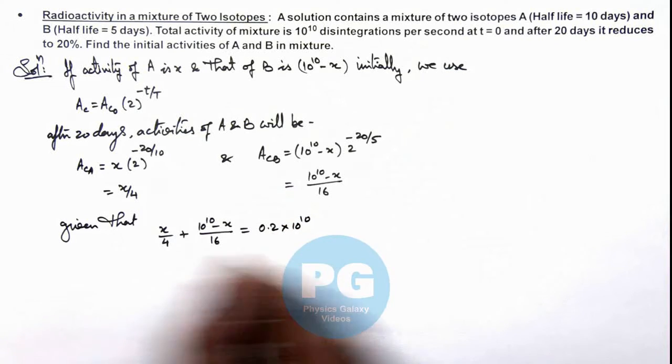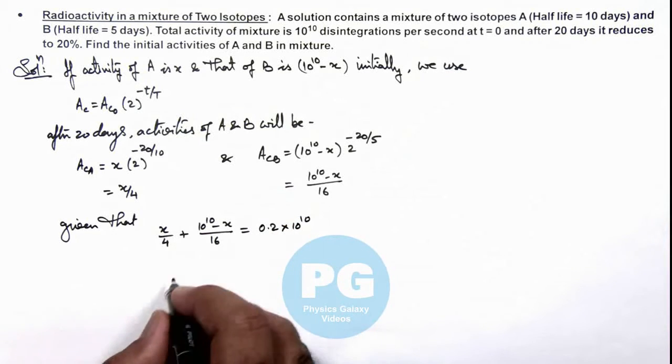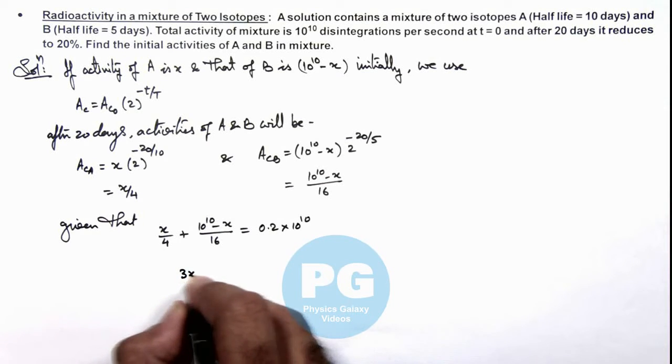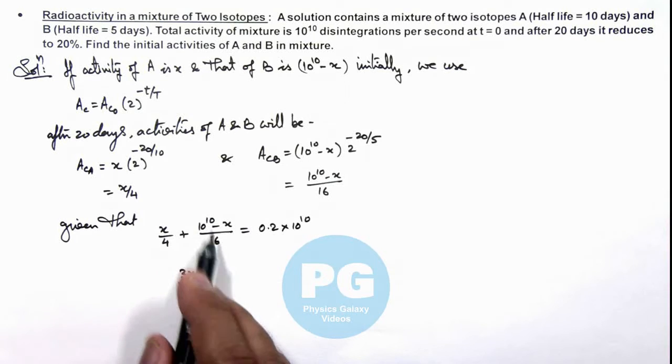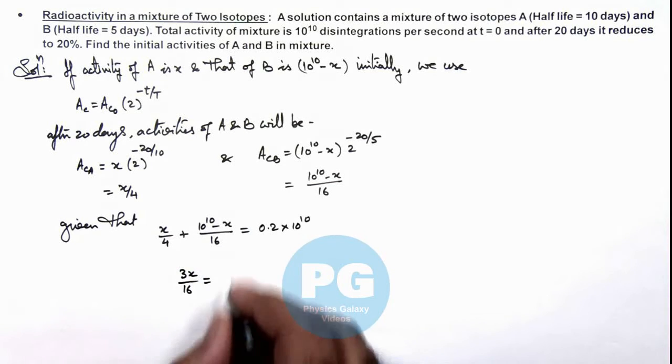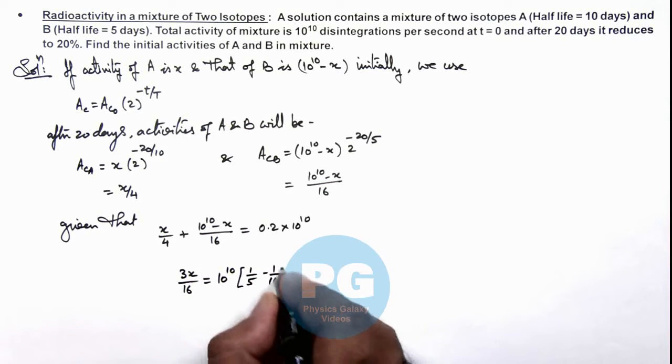So if we simplify this relation, here we can see this gives us 3x by 16 is equal to... and this 10^10 by 16 can be taken on the other side, so this is 10^10 multiplied by 1 by 5 minus 1 by 16.